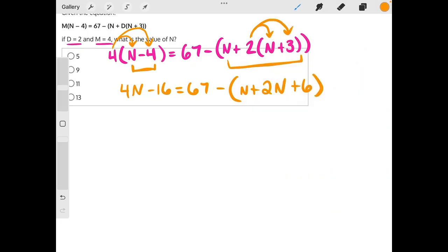Now, before I change colors, we can simplify a little bit further in this set of parentheses, because we have two like terms right here, n plus 2n. If it exists in math, there's always one of them, so 1n plus 2n gives us 3n plus 6 minus 67, and then we bring everything else over.